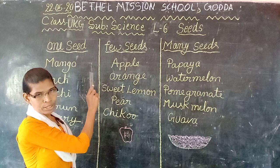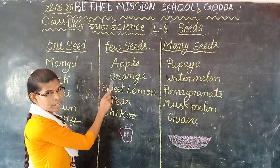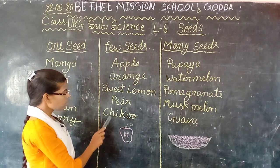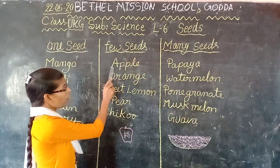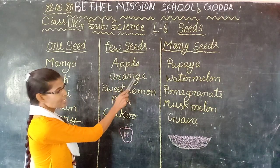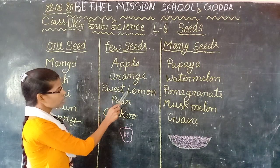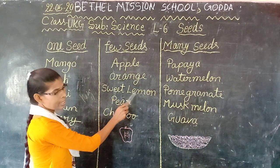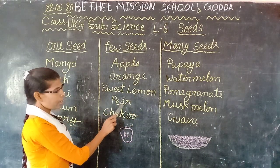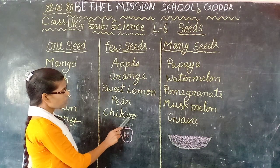Now next we will see few-seeds fruits. The few-seeds fruits are: apple — A-P-P-L-E; orange — O-R-A-N-G-E; sweet lemon — S-W-E-E-T L-E-M-O-N; pear — P-E-A-R; chico — C-H-I-K-O-O.